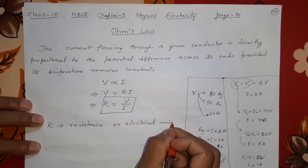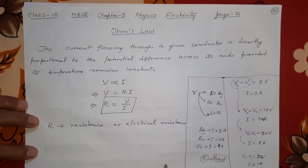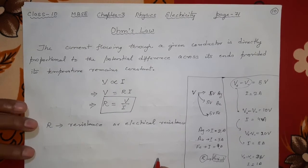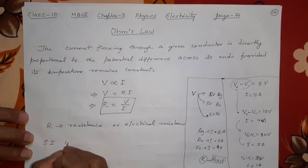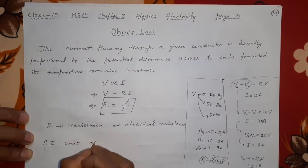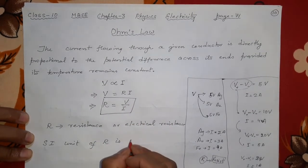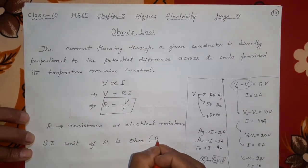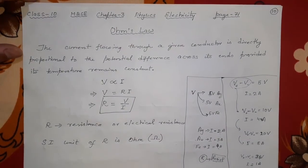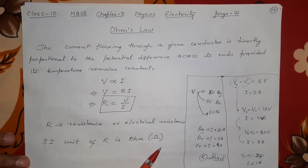R is the electrical resistance — going forward we will call it just resistance, but for the first time call it electrical resistance. The SI unit of R is volt per ampere, or we write Ohm. The symbol for Ohm is omega (Ω). So the SI unit of resistance is Ohm.